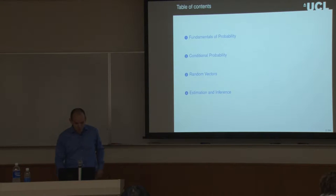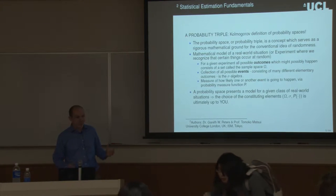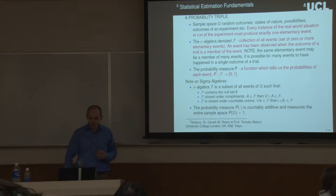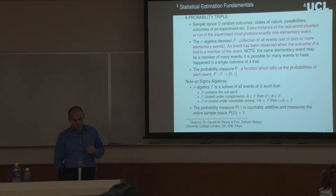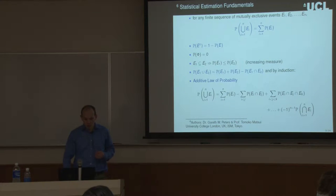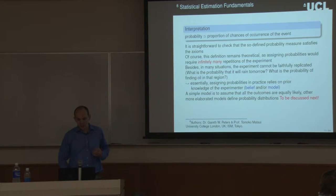Back on the first set of slides, we started off by talking about some of the fundamentals of probability. We introduced this concept of the probability triple, or probability space, with three components: omega, the space of random outcomes; the sigma algebra F; and our probability measure P. Then we talked about some of the probability axioms, and the interpretation of probability in terms of a proportion of chance of occurrence of events and compound events.